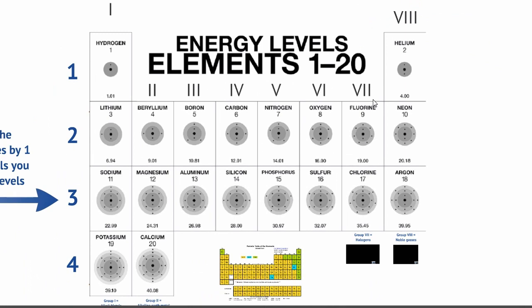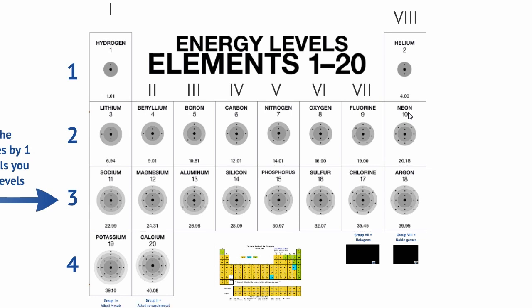The elements in the same group have the same number of valence electrons — the same number of electrons in their outermost shell. Group 1 elements all have one electron in their outer shell. Group 2 all have two. Group 3 all have three. Group 7 all have seven electrons in their outermost shell. Group 8 have eight — with one exception: helium only has two, because the first shell only holds two. What we can say about group 8 is they all have a full outer shell.